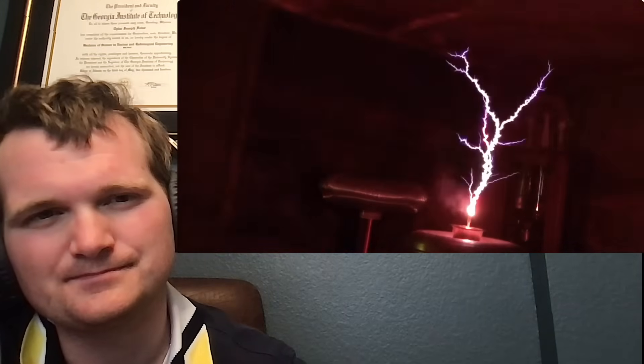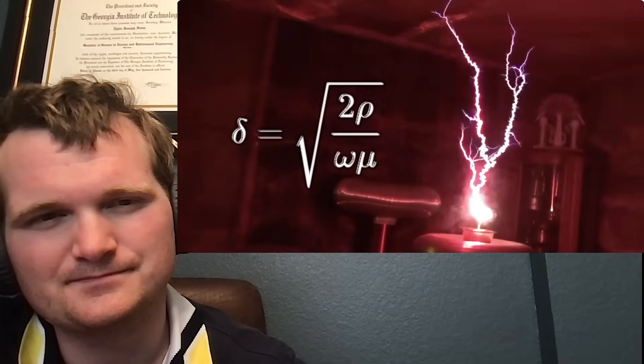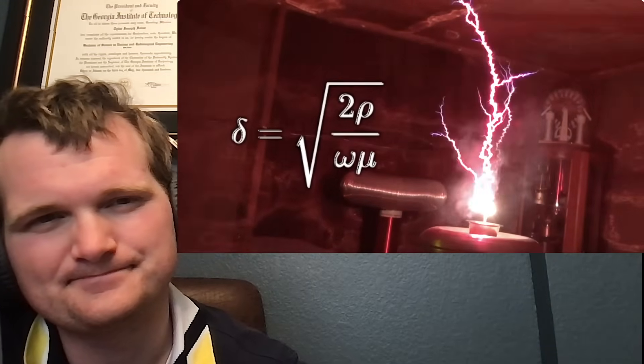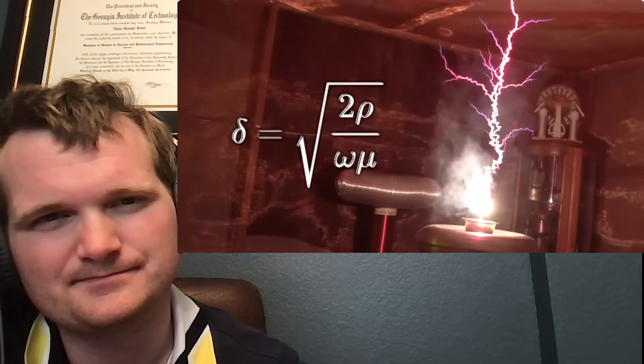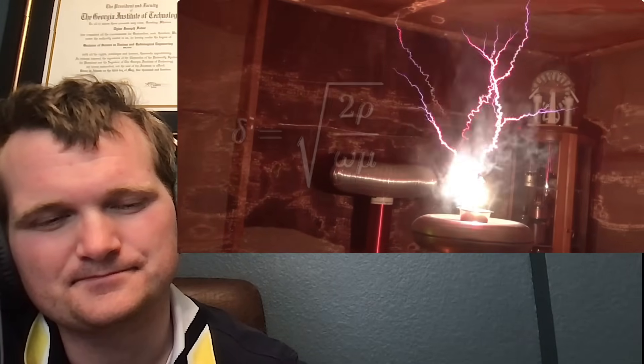Many Tesla coil builders will tell you it's the skin effect at play here. At high frequencies, currents in a conductor are magnetically pushed to the edges. This effect is a critical consideration when it comes to designing a Tesla coil. Same thing with generators and transmission lines, pushes things out to the edge. The skin effect is only significant at these frequencies when dealing with a good conductor like copper. When the material is resistive like flesh that goes out the window. Hmm. So what is it then?